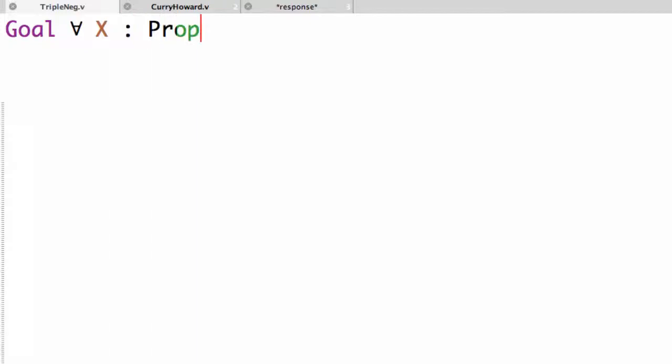So what we want to prove is, for all x in prop, not not not x implies not x. So this says if the triple negation of x holds, then the negation of x holds.